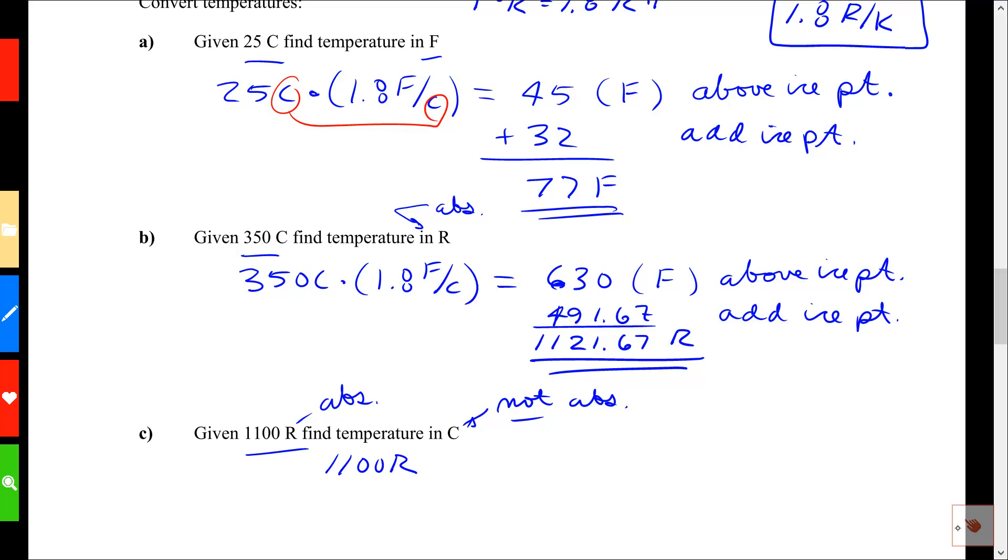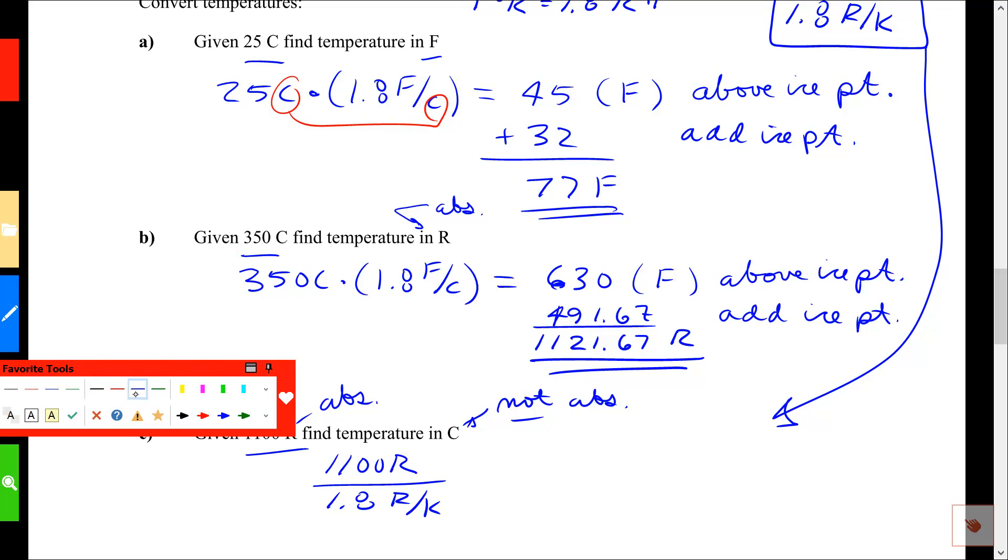and to do my conversion, I'm going to use this conversion factor up here, 1.8 Rankine per Kelvin. So I'm going to pull that down, use that. But I'm going to divide by that, 1.8 Rankine per Kelvin. I have to divide so that the Rankine here cancels the Rankine there, and the Kelvin comes upstairs.